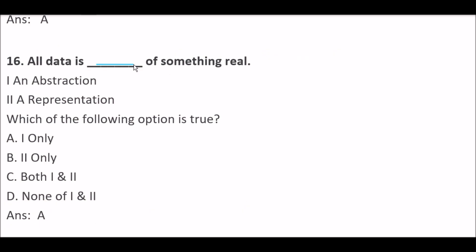All data is blank space of something real. First statement: an abstraction. Second statement: a representation. Which of the following is true? Option A: First only. Option B: Second only. Option C: Both first and second. Option D: None. Right answer is Option A — First only. All data is an abstraction of something real — not a representation.